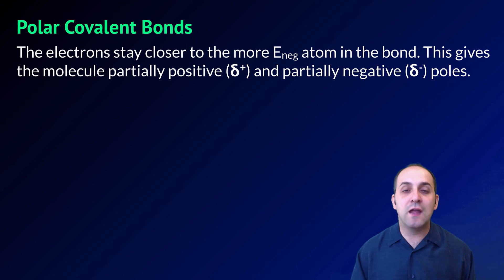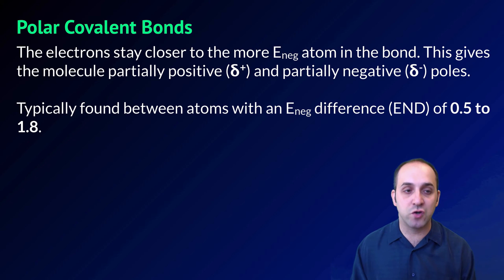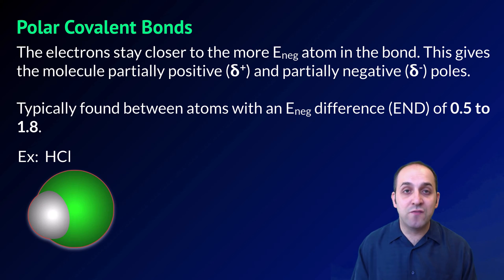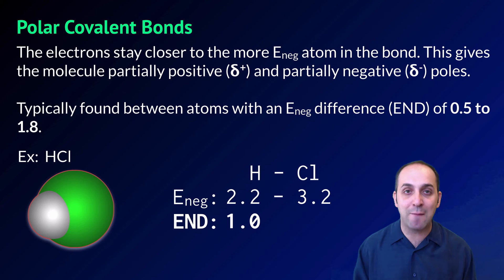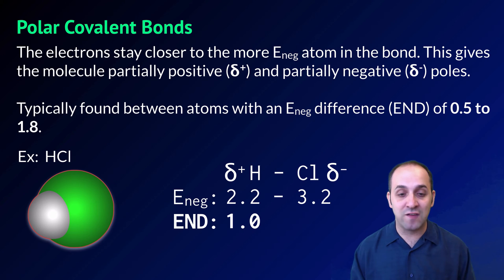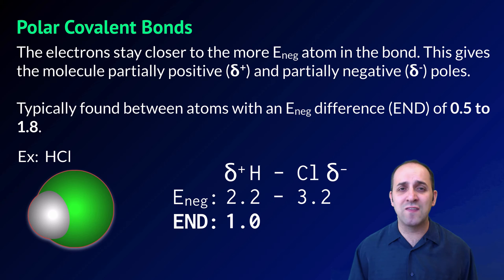In a polar covalent bond, the electrons are not shared equally. This is due to a difference in electronegativity between the atoms in the bond. Because the electrons are not shared equally, the atoms in the bond are going to have partial charges, with the more electronegative atom having the partially negative charge and the less electronegative atom having the partially positive charge. This is generally found in atoms with an electronegativity difference of anywhere from 0.5 up to 1.8. A good example of this is hydrogen chloride, or HCl. Hydrogen is 2.2 and chlorine is 3.2, giving a difference of 1.0, which puts us in the polar bond range. As a result, chlorine is going to be partially negative, symbolized with a lowercase delta negative sign, and hydrogen is going to be partially positive, symbolized with a lowercase delta positive sign. We use these lowercase deltas to demonstrate that it's not a full charge — it's a partial charge due to the polarity of the bond.